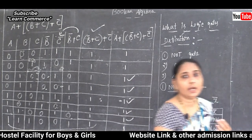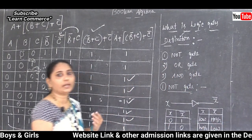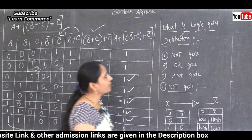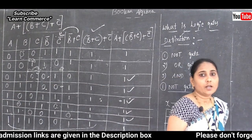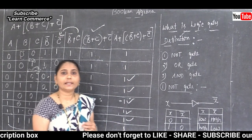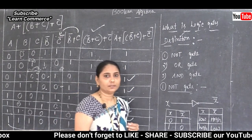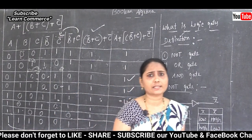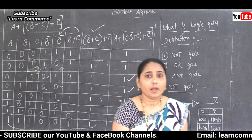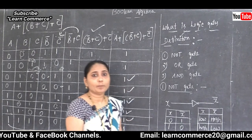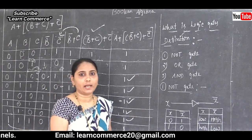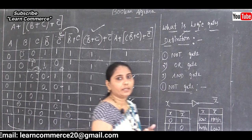Now let's cover another important concept in Boolean algebra. The first question: what is a logic gate? A logic gate is an electronic circuit that operates using one or more input signals.